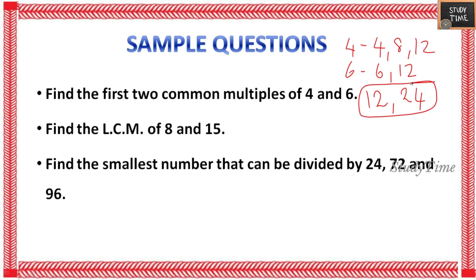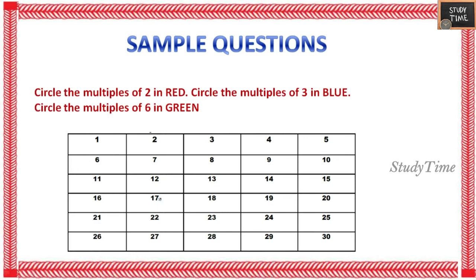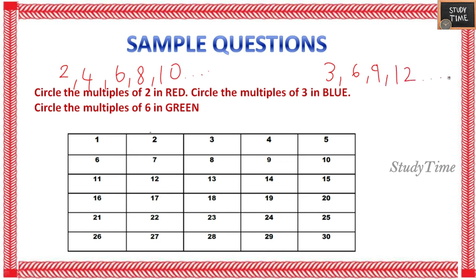Find the LCM of 8 and 15 — you can pause the video and try. Find the smallest number that can be divided by 24, 72, and 96; the answer is 2. Another sample question: circle the multiples of 2 in red — 2, 4, 6, 8, 10, and so on; multiples of 3 in blue — 3, 6, 9, 12, and so on; and multiples of 6 in green — 6, 12, 18, 24, and so on. This is an easy question.